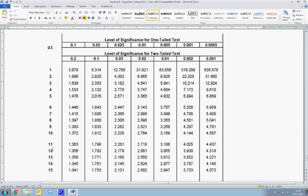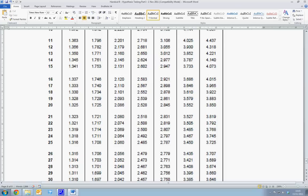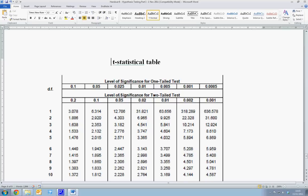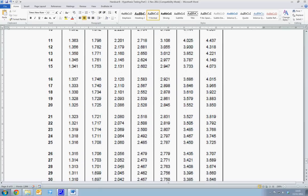So, we go down to row 28 and across to our desired column. We go across to 0.05 for a two-tail test. This gives us a t-critical value of 2.048.